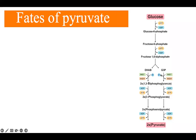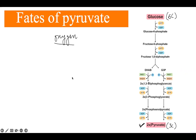In this video we are going to discuss the fates of pyruvate. In the glycolysis pathway, the six-carbon glucose molecule is broken down into two molecules of pyruvate with three carbons each. What happens to this pyruvate after it has been formed by glycolysis is dependent upon the availability of oxygen inside the cell — and that is what we are going to discuss today.